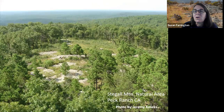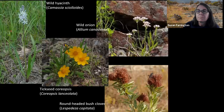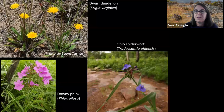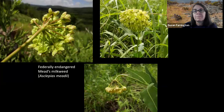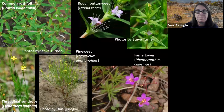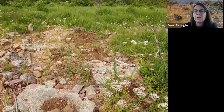Trees and shrubs on igneous glades often grow in bedrock fractures and include blackjack oak, post oak, shortleaf pine, black hickory, and serviceberry. The herbaceous plant community tends to be less rich than for calcareous glades. Prominent species include wild hyacinth, tickseed coreopsis, wild onion, brown-headed bush clover, dwarf dandelion, downy phlox, and Ohio spiderwort. In deeper soil on a few igneous glades in the St. Francis Mountains, the federally endangered Mead's milkweed thrives. In the shallowest soil areas, we find rushfoil, rough buttonweed, pineweed, threadleaf sundrops, and large-flowered fameflower. Like other glades, igneous glades are unfortunately vulnerable to hog damage — here you can see they were rooting for wild onions, one of their favorites.